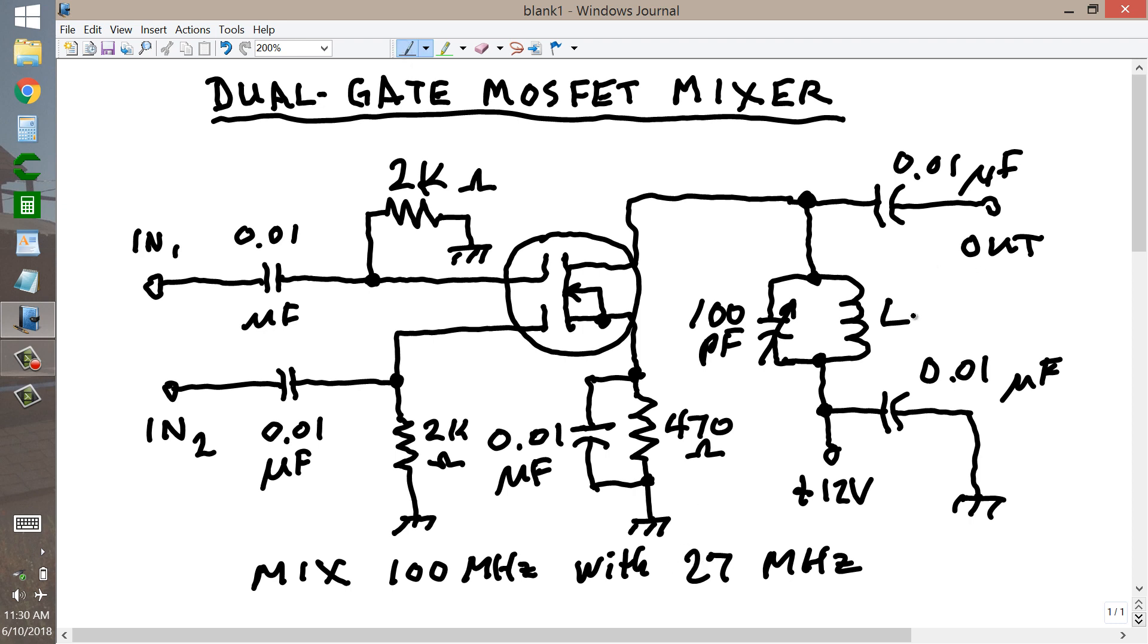Just for the sake of argument, let's say that we want 73 MHz. This is the output frequency, 73 MHz. This is a suggested circuit for a dual-gate MOSFET mixer.